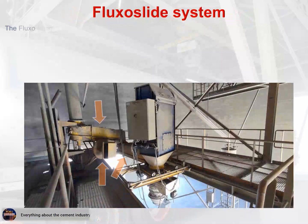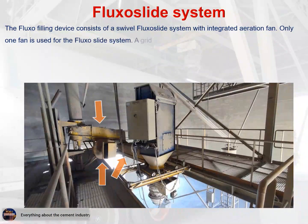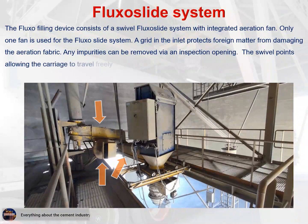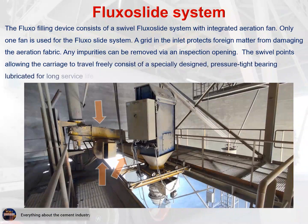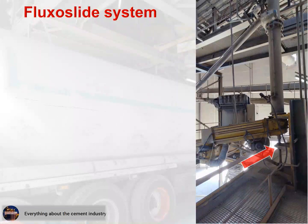The Fluxo filling device consists of a swivel Fluxo slide system with an integrated aeration fan. Only one fan is used for the Fluxo slide system. A grid in the inlet protects foreign matter from damaging the aeration fabric, and any impurities can be removed via an inspection opening. The swivel points allowing the carriage to travel freely consist of a specially designed pressure-tight bearing lubricated for long service life.